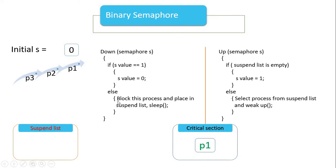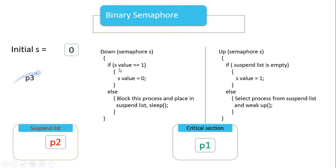This is the condition: block this process and place it in the suspend list. P1 is in the suspend list. P3 is the same — the value is 0, which means the condition is false. Block this process and place it in the suspend list. P2 or P3 is in the suspend list.